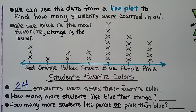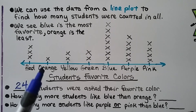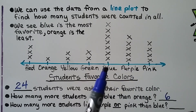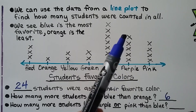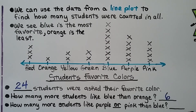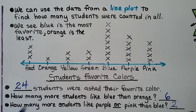How many more students liked blue than orange? Blue has 7 and orange is only 1. The difference between 7 and 1 is 6. How many more students liked purple or pink than blue? We have 5 purple and 4 pink, so that's 9 altogether, and blue has 7. So 9 minus 7 — that would be 2 more students liked purple or pink than blue. We can easily see that blue is the most popular favorite color because it has the most X's, and orange is the least.